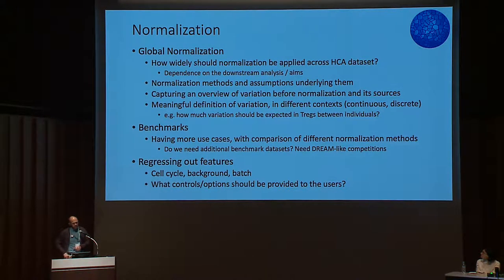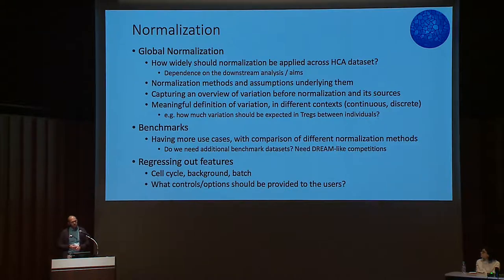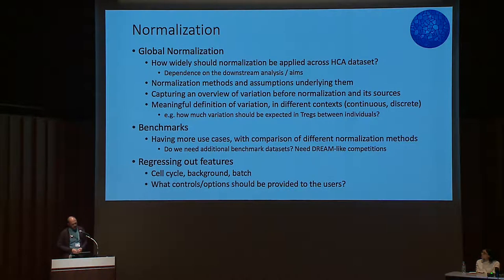Another suggestion from the same group was to capture an overview of variation before normalization — another way of putting it, capturing the variation that will be removed by normalization, to assess both the magnitude of the effects being removed and their sources. Because we have technical and submitted metadata, sometimes you can see that the major variation removed was platform-based or cell size-based. Having this as a separate output before normalization may help researchers assess the impact.